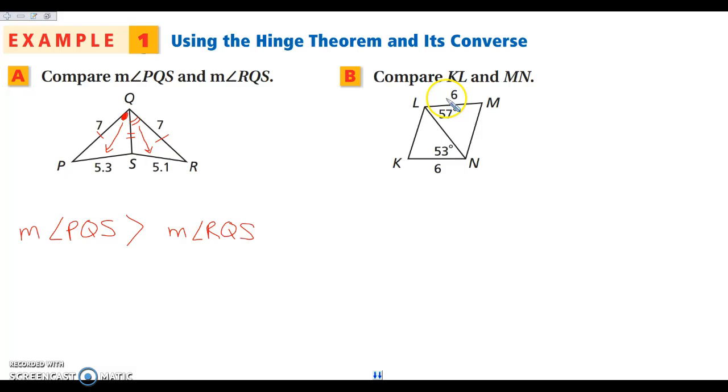So let's take a look here. I want to compare segment KL and segment MN. I know that LM and KN are congruent, and again I have my reflexive congruent side here. So looking at angle MLN is bigger than angle LNK. So that means the side across from the bigger angle is the bigger side. So that means that MN is greater than KL.